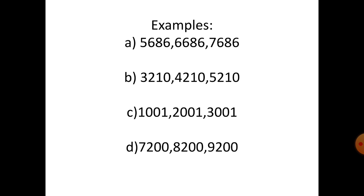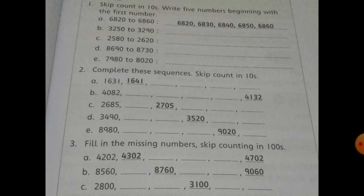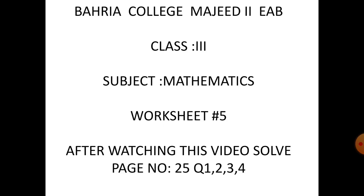Example D: seven thousand two hundred, eight thousand two hundred, nine thousand two hundred. For your homework, after watching this video, solve page number twenty-five, questions one, two, three, and four. This is your worksheet number five. Okay, take care — Allah Hafiz!